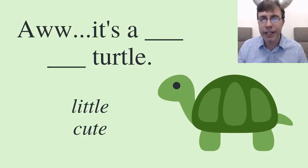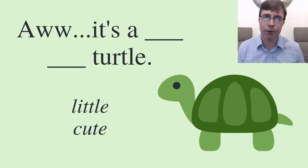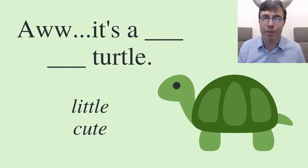The way we're going to do this is start with an easy, controlled practice where I give you the adjectives and you just put them in order. Then we'll work toward a freer practice where I want you to write sentences in the chat. So the first question: think of it as someone having a conversation and saying, 'Oh, it's a turtle.' I'm giving you two adjectives — little and cute. Which one comes first? Write your answer in the chat or in the comments.